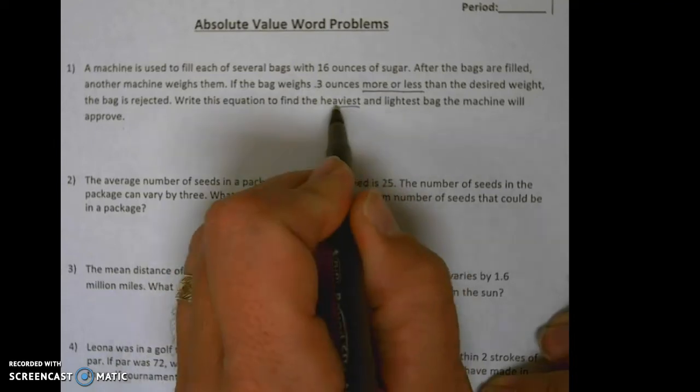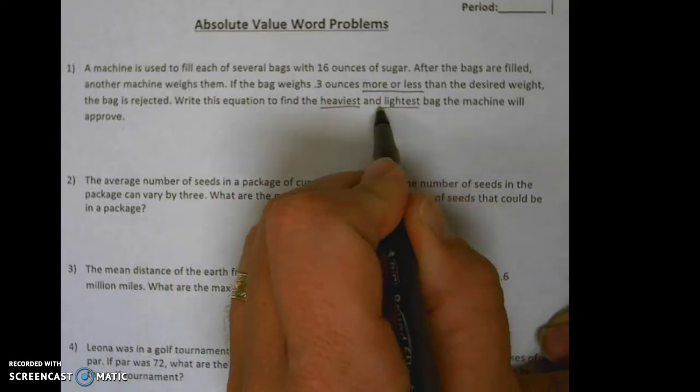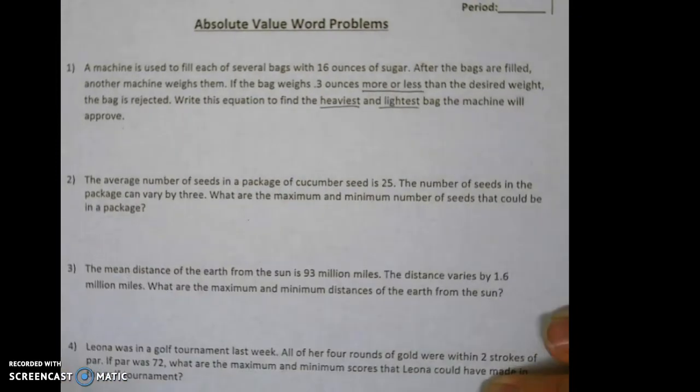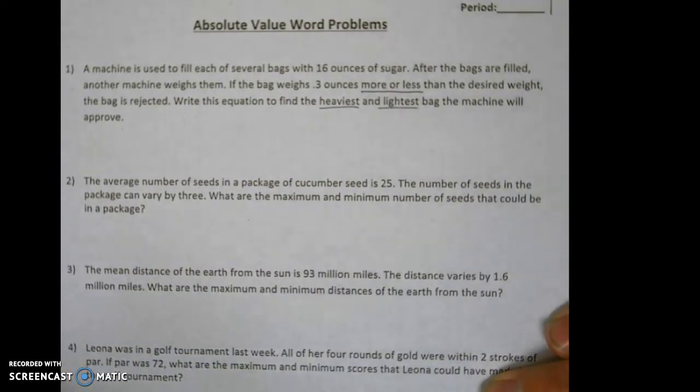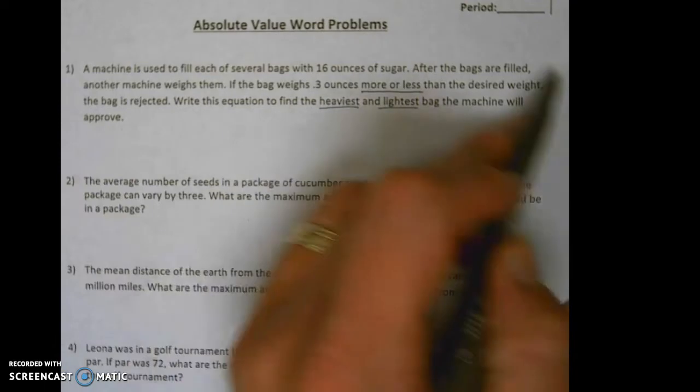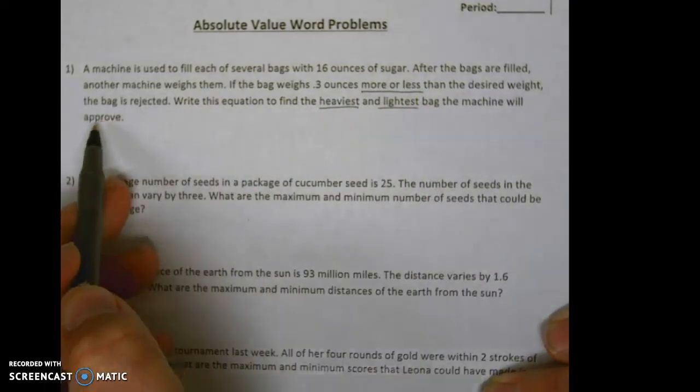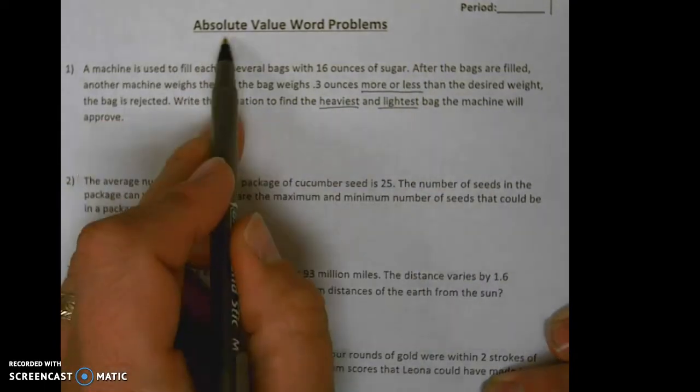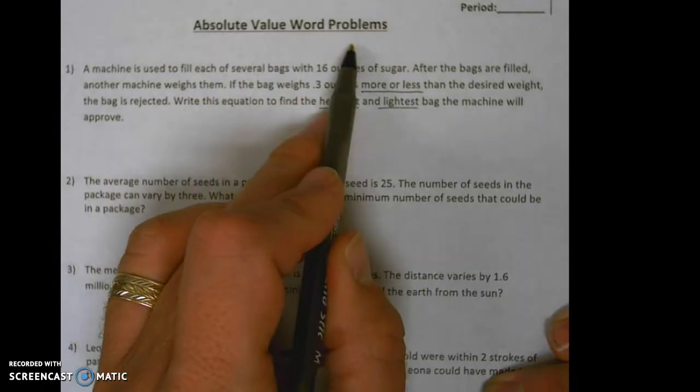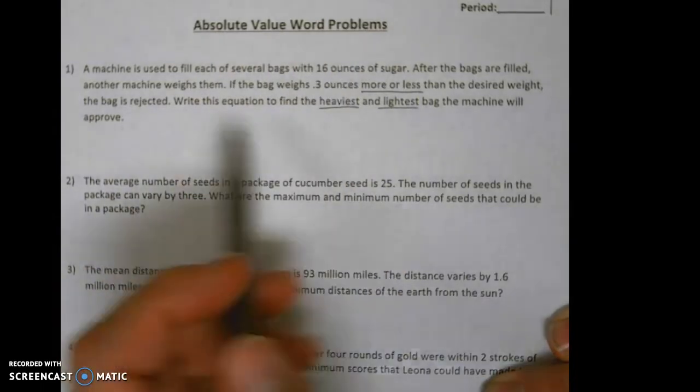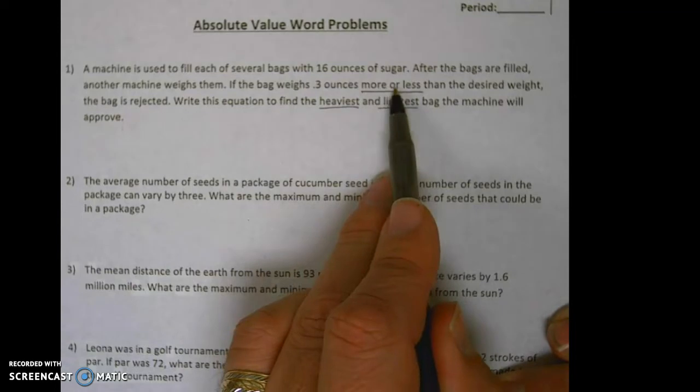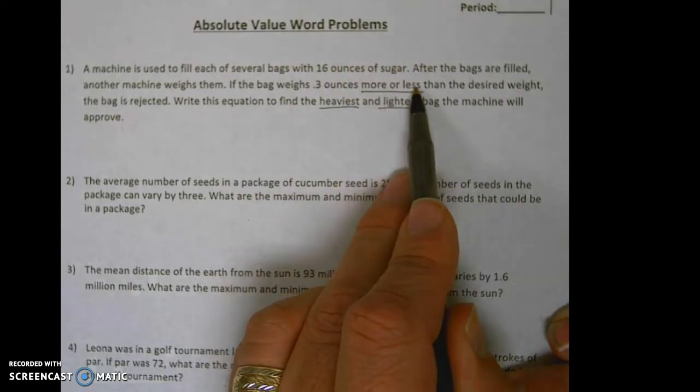First of all, when we read this problem, how do we know that it's an absolute value word problem? Well, the key here is right here: more or less. We can be above weight by 0.3 ounces or we can be below weight by 0.3 ounces.